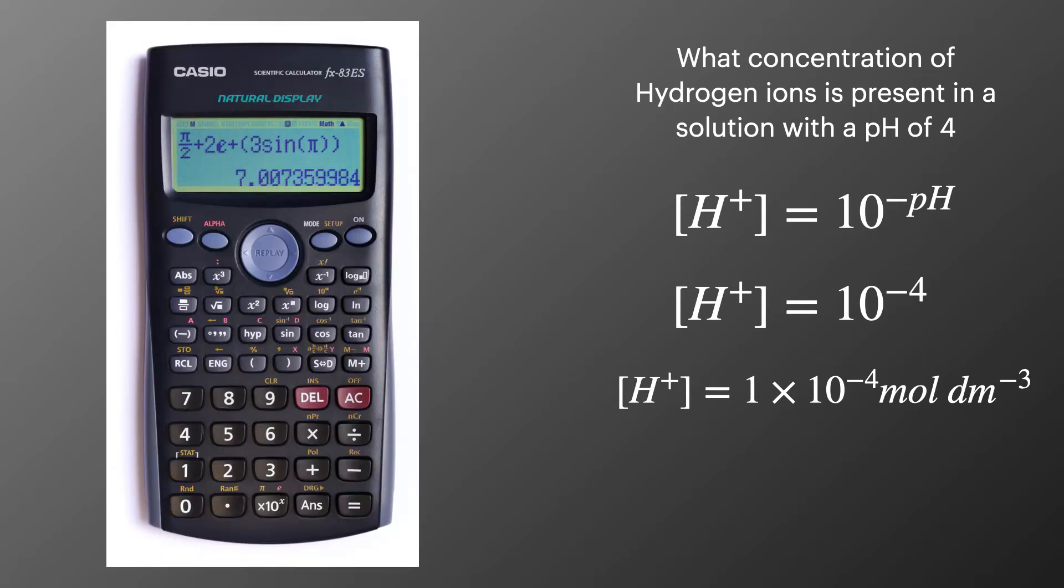Again with using our calculator we can speed up the function by using this button on the calculator where we use shift first and then press the log button which actually gives us 10 to the power of a number and we can just type the number in that we need.